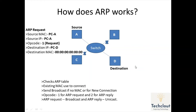If a device's IP matches the destination IP in the ARP request, the destination device will update its own ARP table and store the source device's MAC address. In this scenario, Computer D is the destination, so Computer D updates its ARP table with the source MAC address received in the ARP request. Computer D then replies back to Computer A with an ARP reply, putting its own MAC address as the source MAC.